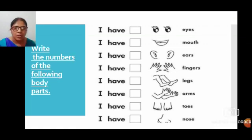I have ___ arms. I have ___ toes. I have ___ nose. So you have to count the numbers of these body parts and fill in this box.